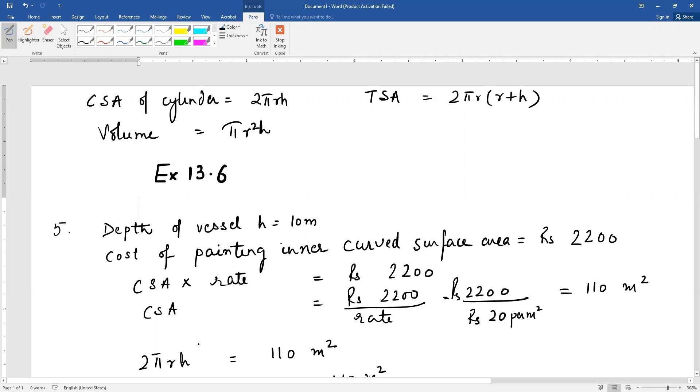Moving on to question number 5 of exercise 13.6: It costs rupees 2200 to paint the inner curved surface area of a cylindrical vessel 10 meters deep. If the cost of painting is at the rate of 20 rupees per meter square, find the inner curved surface area.